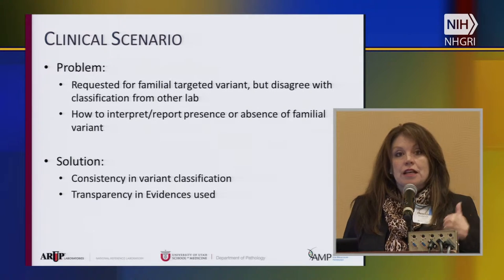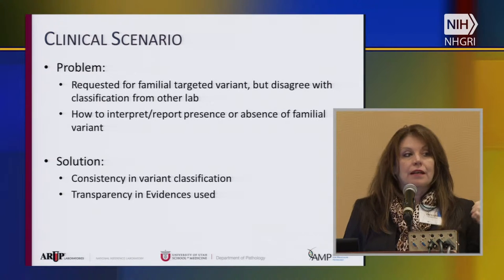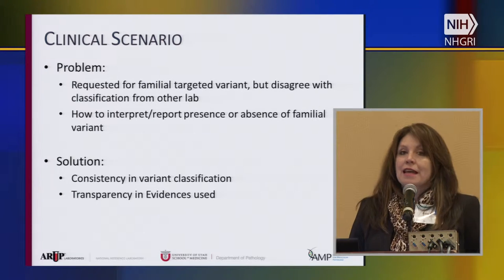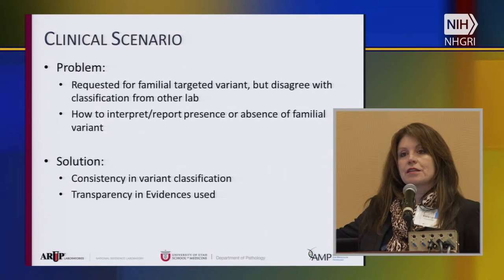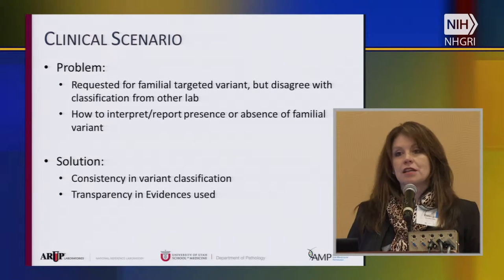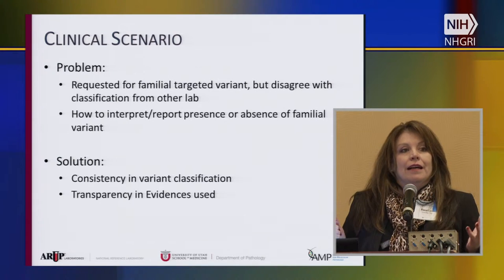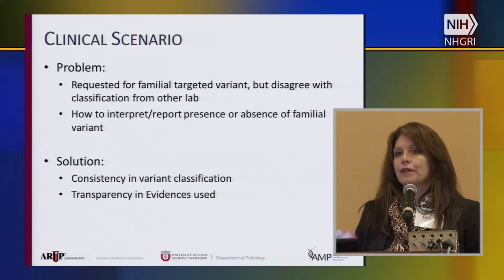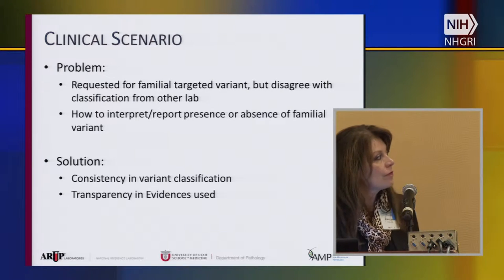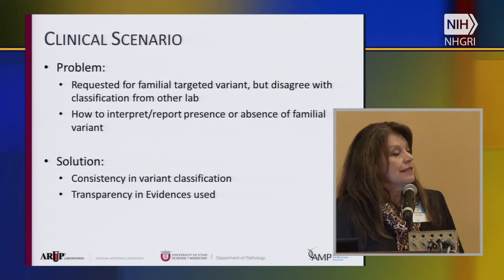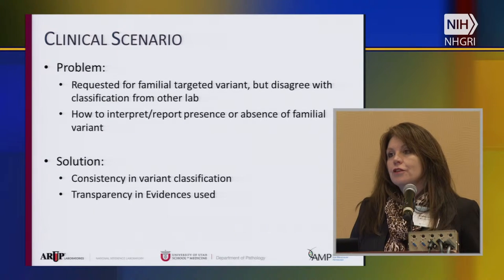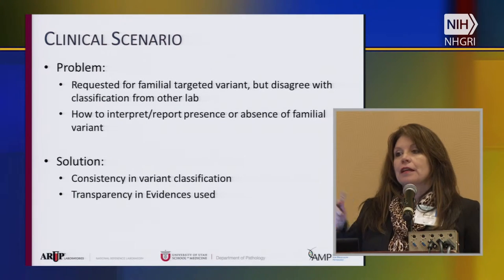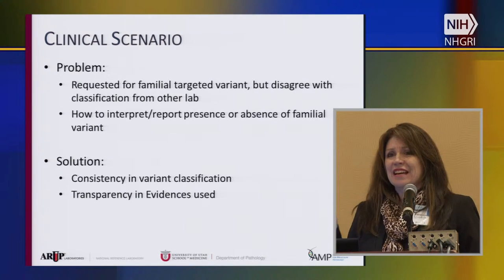Often the problem is that the clinician has misinterpreted a likely pathogenic report as pathogenic. Other times we have the report in front of us with a statement that the laboratory follows the ACMG guidelines for variant classification. I looked at this and said they may be following them, but they're interpreting them very differently — because if I'm following them as well, I would never have reached pathogenic. So not only do we need consistency in variant classification, we need to start showing transparency in how we got there. It didn't help me to hear that a lab followed ACMG-AMP guidelines without knowing exactly what they used.